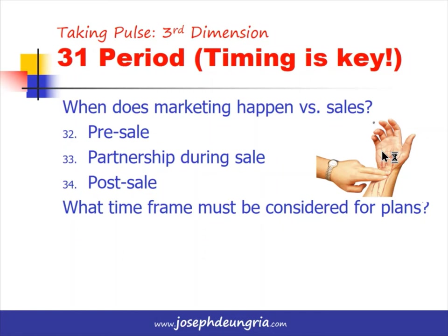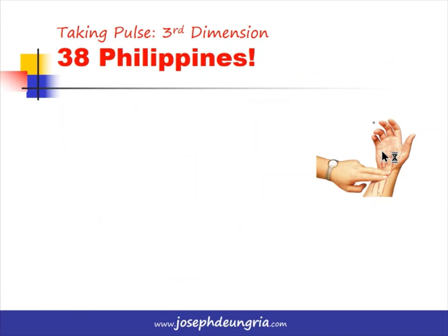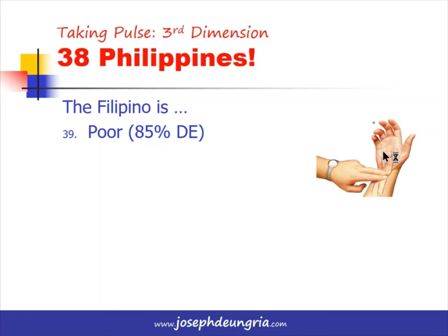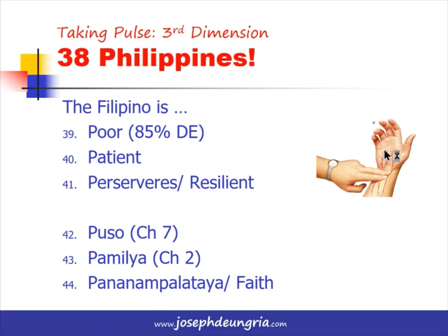What other things should we consider regarding the pulse of marketing? In the Philippines, 85% of the population is in socioeconomic class DE, meaning the Filipino is poor. But even so, the Filipino is very patient, perseveres, and is very resilient in times of crisis and difficulties. Other characteristics of the Filipino include Puso — you might think of Channel 7 — Pamilya linked to Channel 2 — and Pananampalataya or Faith. These are what make the Philippines and Filipinos different from many other markets.